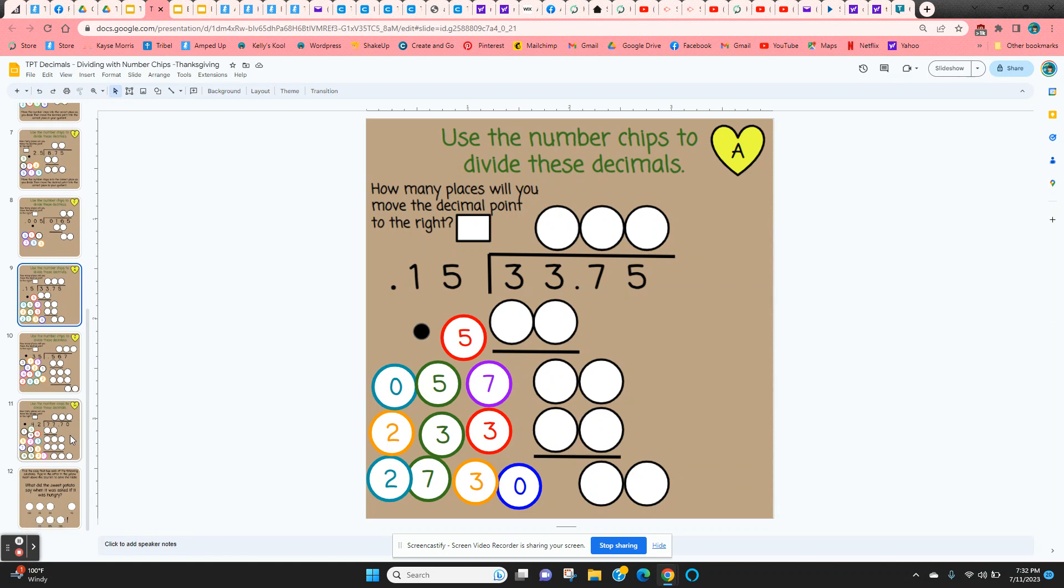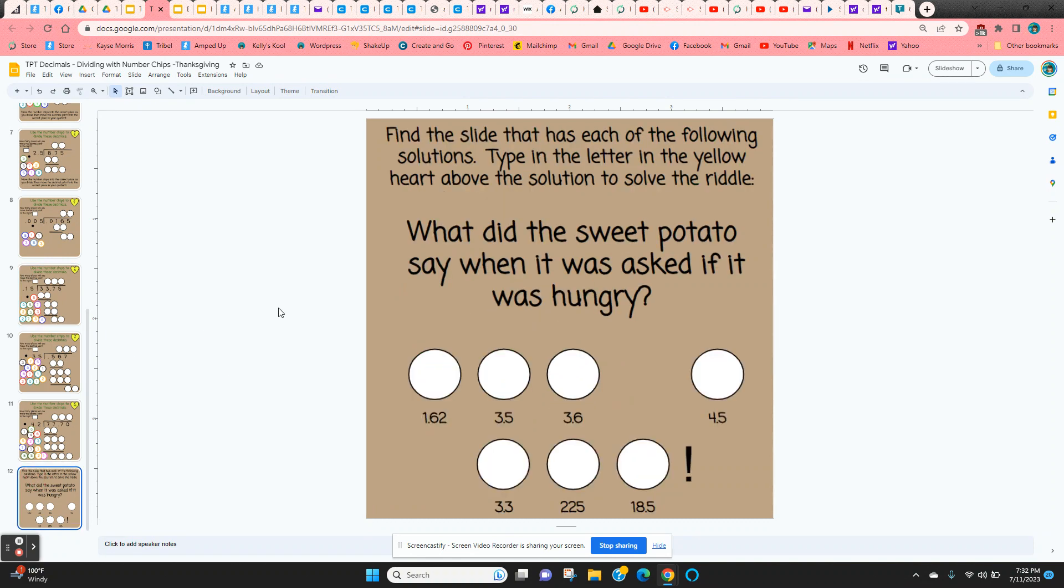So they have several problems to practice with. Now each one of these slides has a yellow heart in the upper right-hand corner with a letter. So that's going to help them solve the riddle in the last slide. So what did the sweet potato say when it was asked if it was hungry? So they have to find these quotients on one of the previous slides. When they find that quotient, then they're going to look in the upper right-hand corner. They'll find a letter in the yellow heart, and they're going to type that letter above its quotient. And that should solve the riddle.